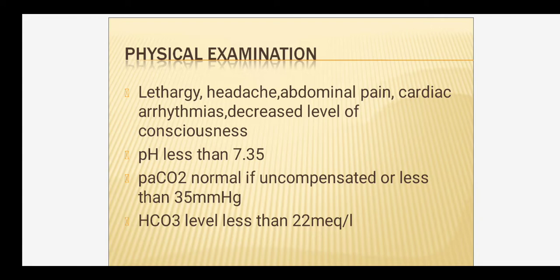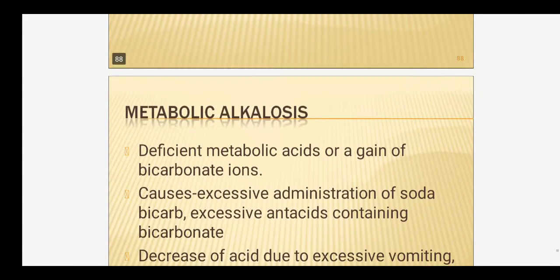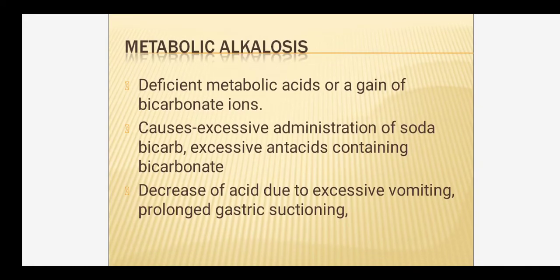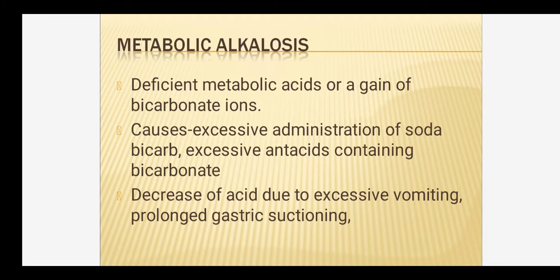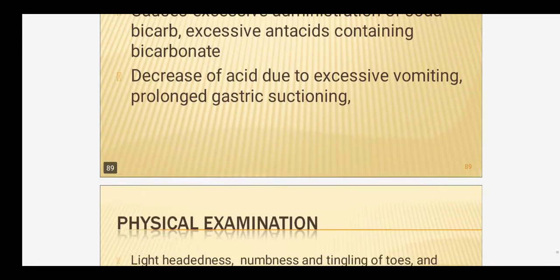Next is metabolic alkalosis. Metabolic alkalosis occurs when there is a deficiency of metabolic acids or a gain of bicarbonate ions. Causes include excessive administration of sodium bicarbonate, excessive antacids containing bicarbonate, decreased acid due to excessive vomiting where HCl is lost, and prolonged gastric suctioning which also causes large amounts of HCl to be lost from the stomach.